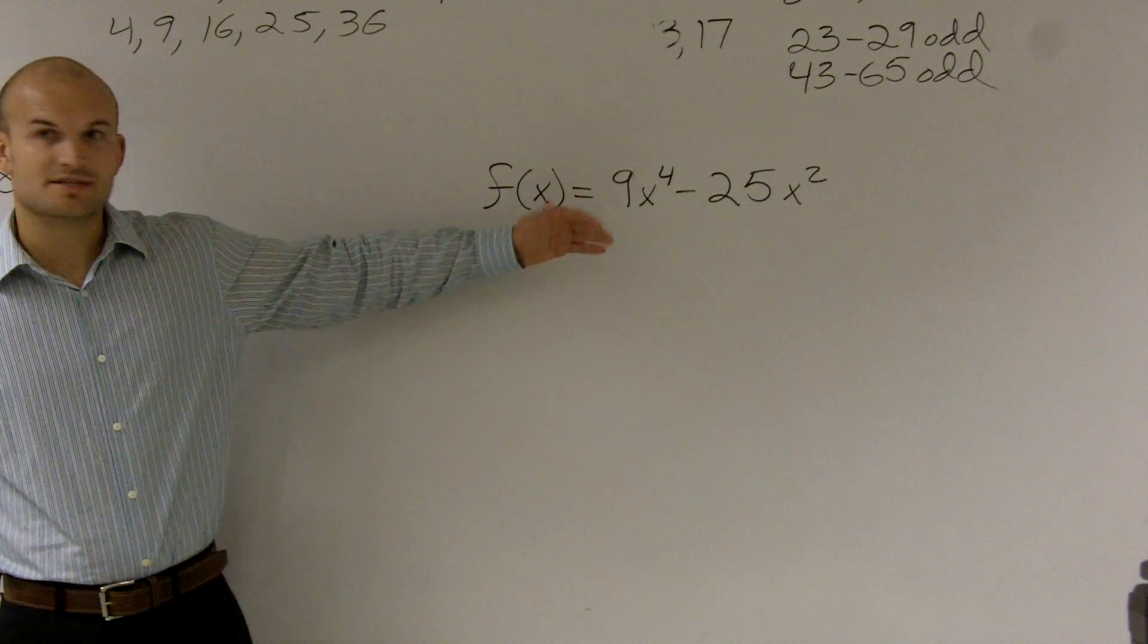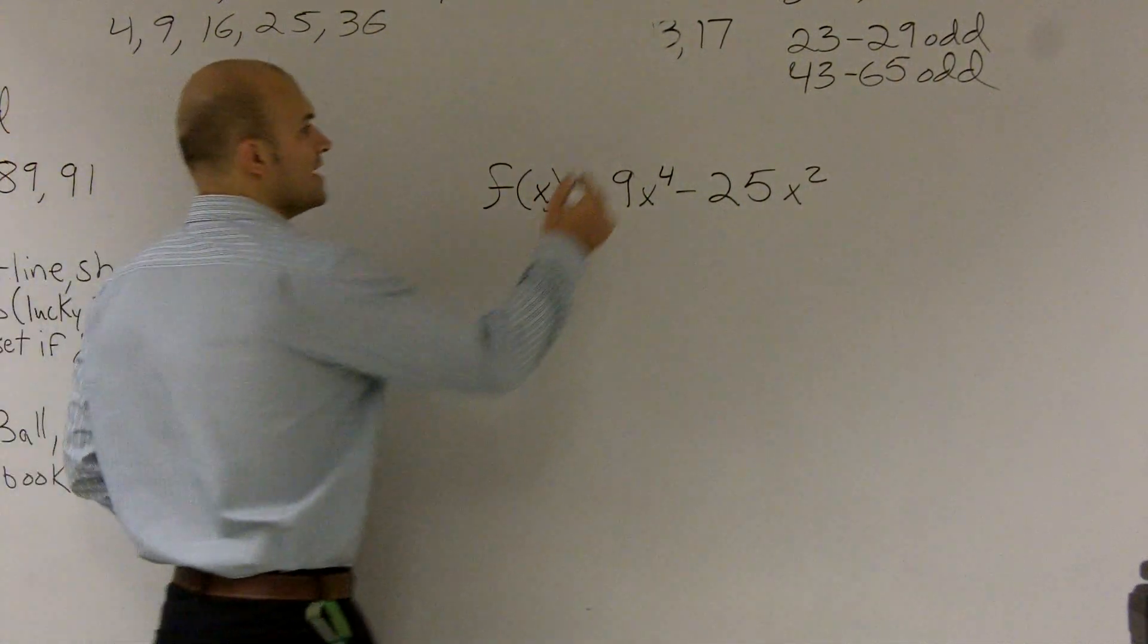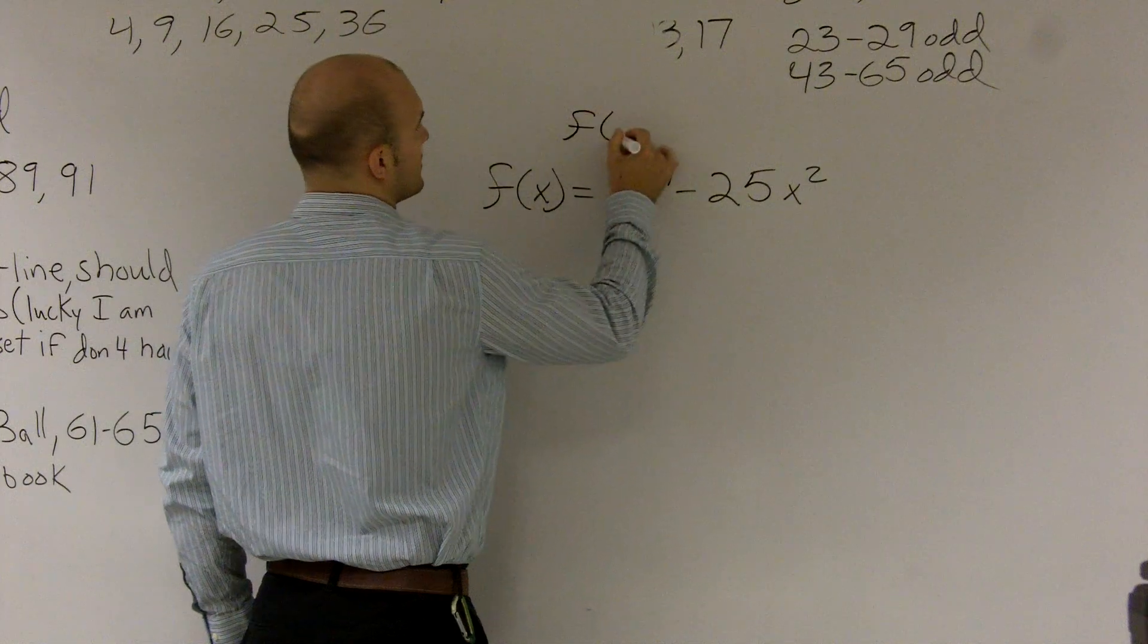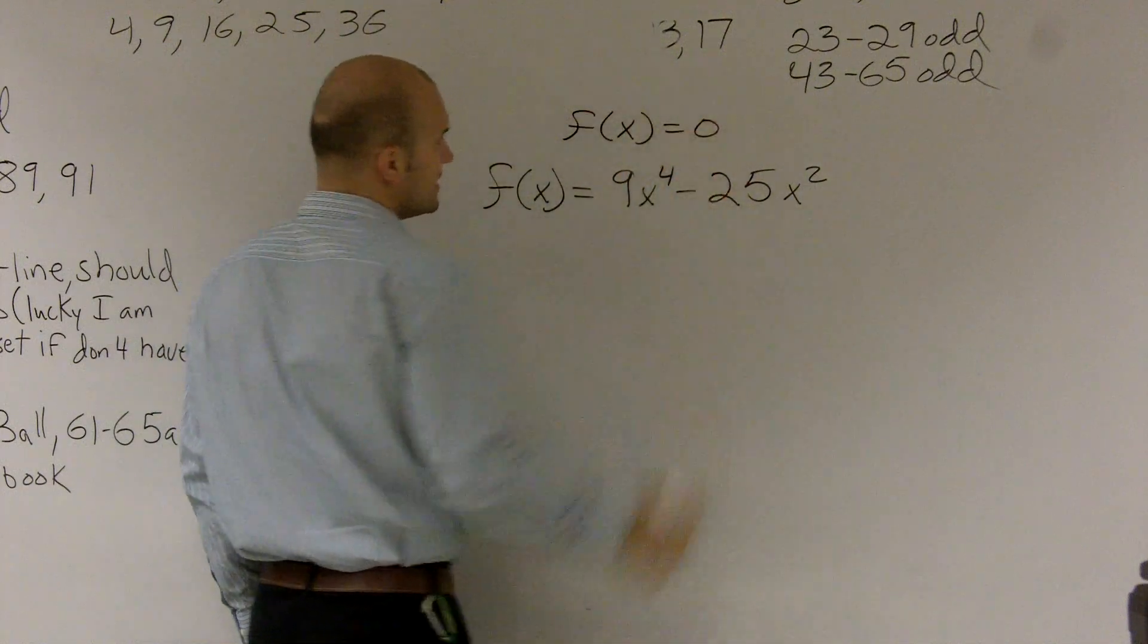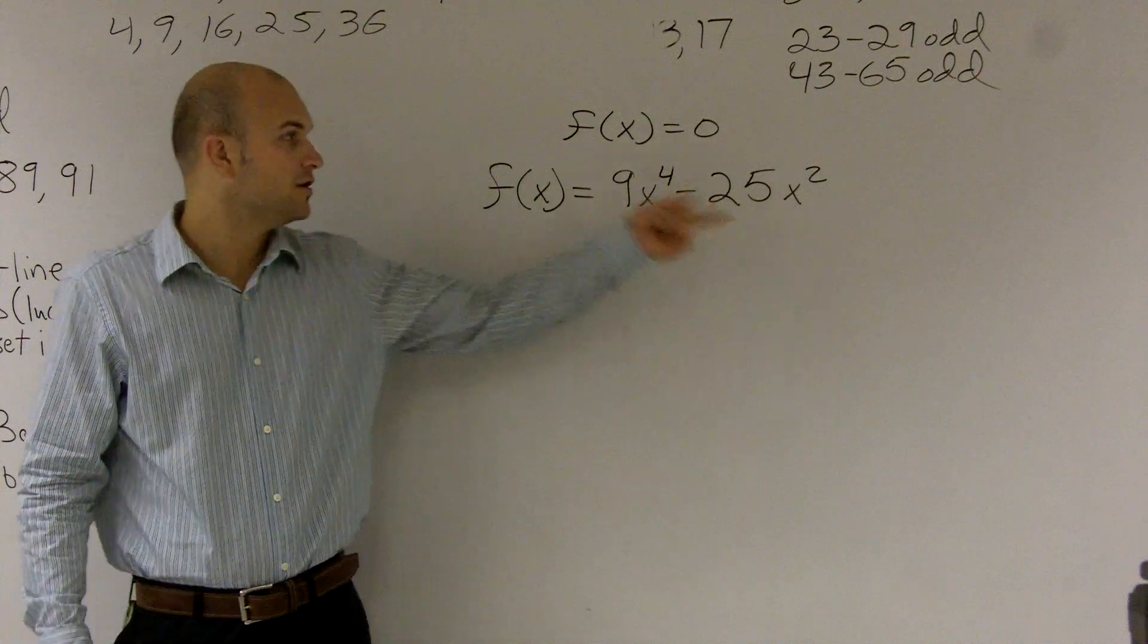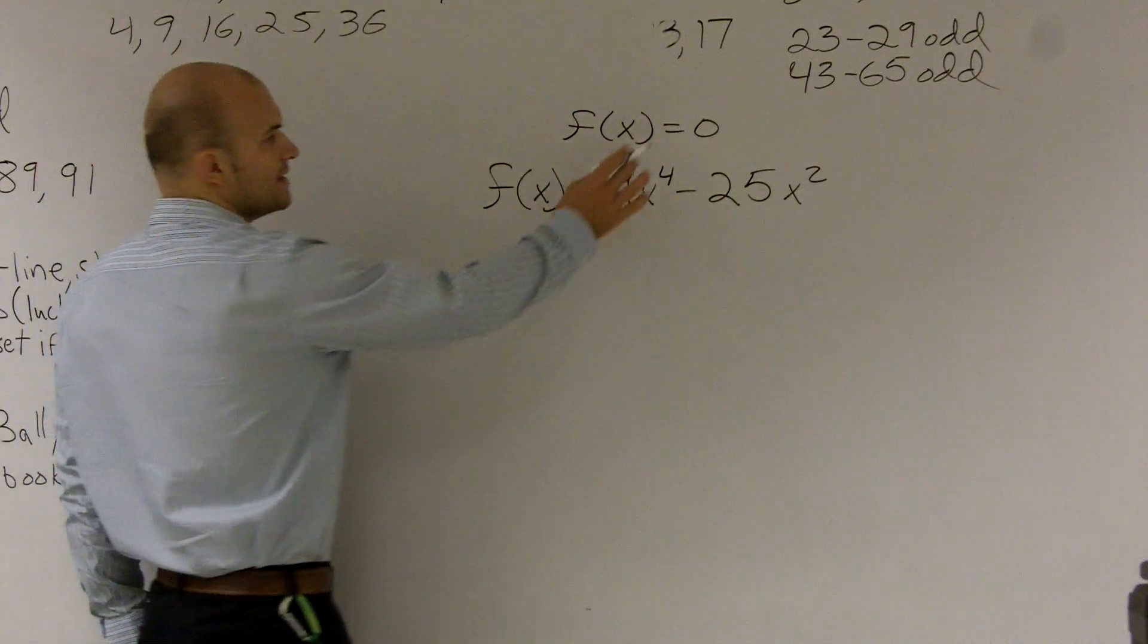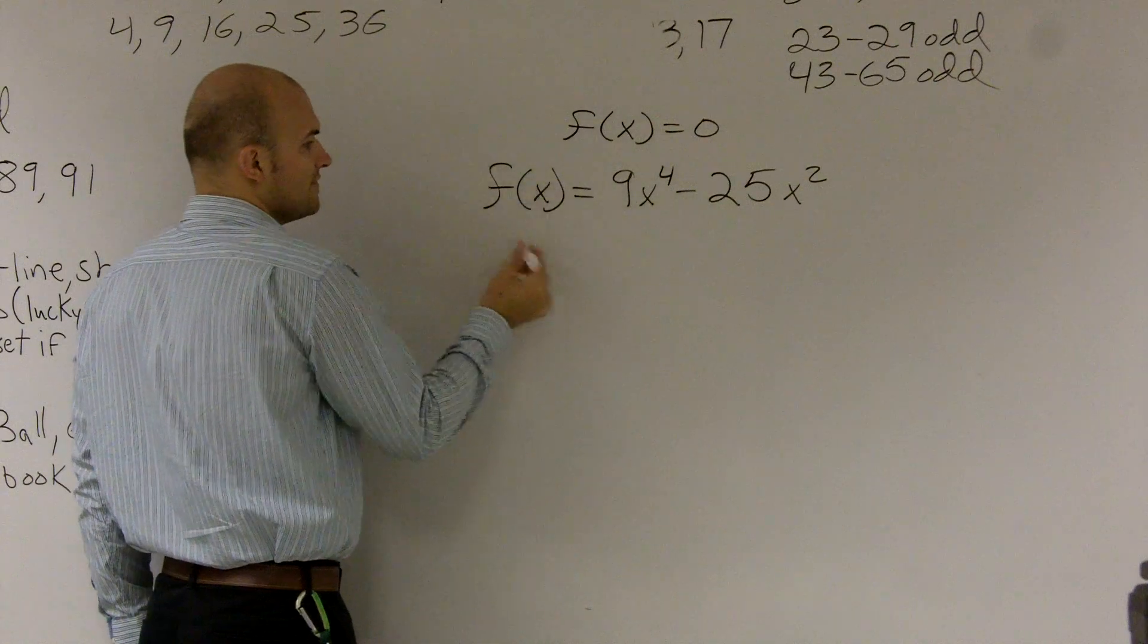In this problem, it's asking us to find the zeros of the function. So if you remember what the zeros of the function are, that is going to be when our function is equal to zero. We're going to want to find what the values of x are when our function equals zero. So what we're first going to want to do is substitute a zero for our f of x.